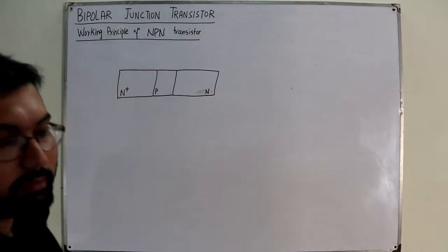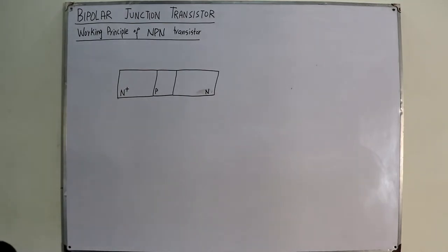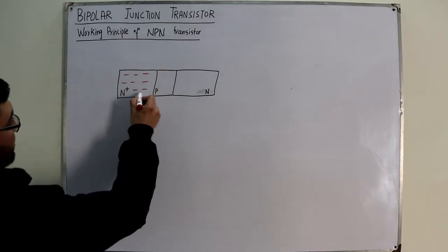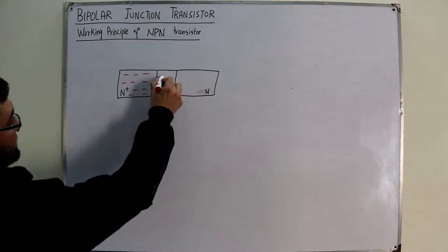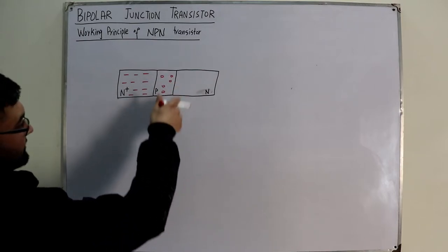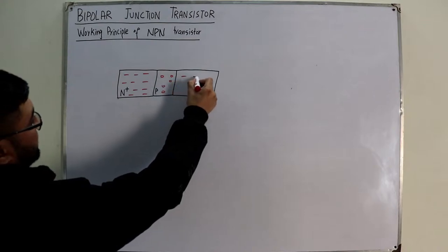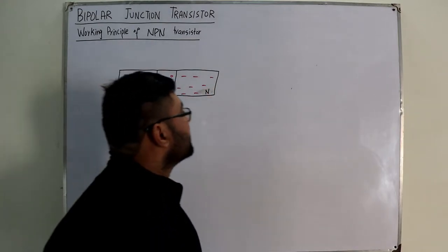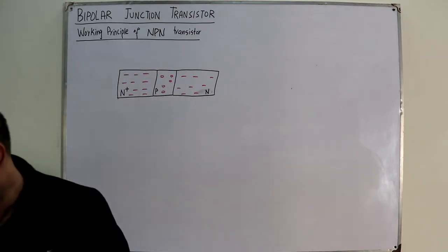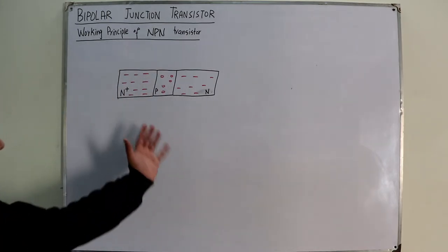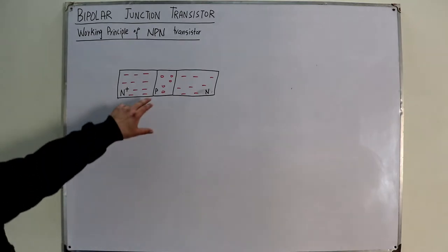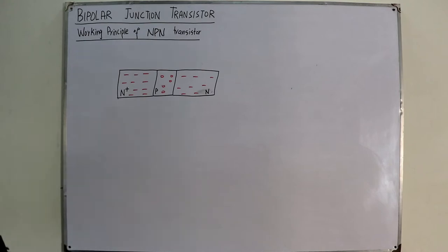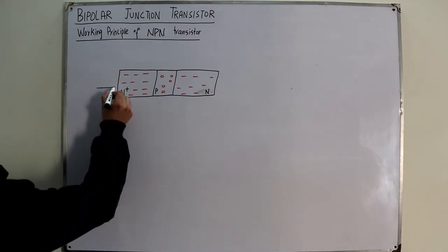The majority carriers in the N regions are electrons, and the majority carriers in the P base are holes — but few in number due to the thin width and low doping concentration. Similarly, the collector has electrons as majority carriers but at lower concentration. To operate in the active region, the emitter-base junction must be forward biased and the collector-base junction reverse biased.